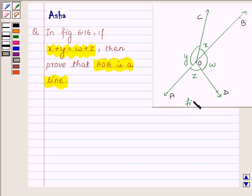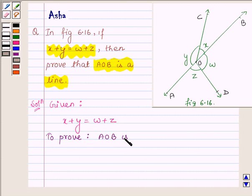So this is figure 6.16. Let us now begin with the solution. We are given that x plus y equals w plus z, and we are required to prove that AOB is a line.